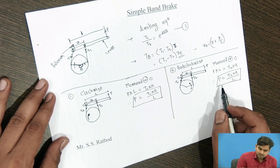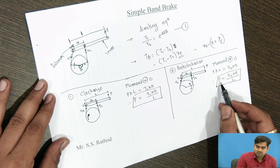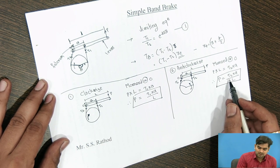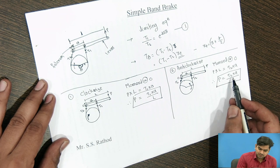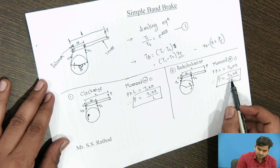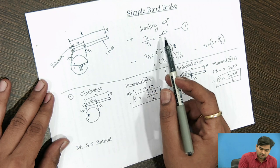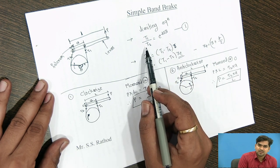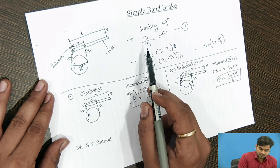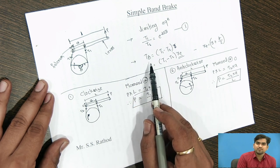From these equations, if we know the amount of force P applied, we get the value of T2. By knowing the value of T2 and substituting it into the limiting equation, along with the coefficient of friction and the angle of lap theta, we get the value of T1. Knowing T1 and T2, we can easily calculate the braking torque.